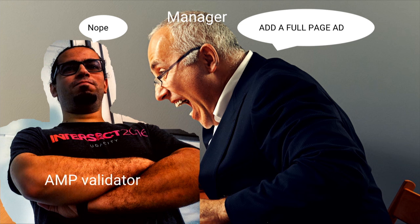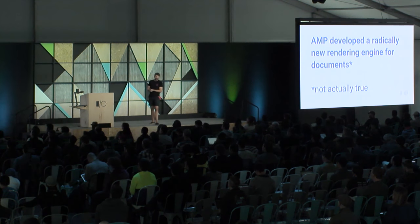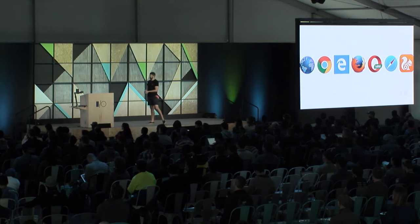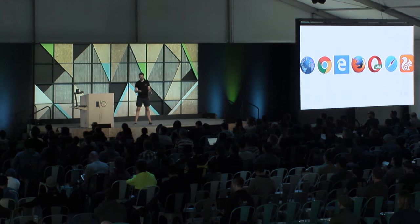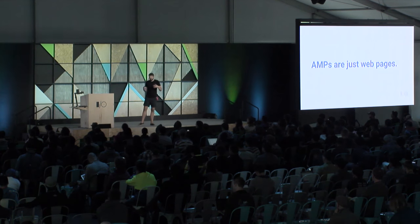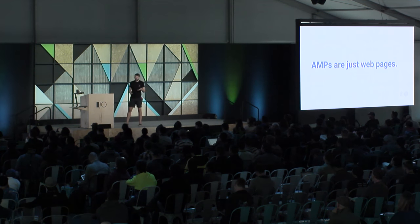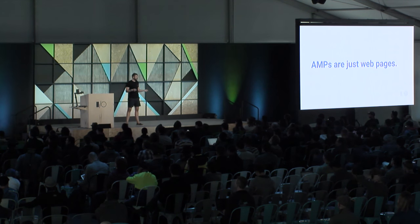Let's go into how AMP works. We did not develop a radically new rendering engine for documents - because why would you? We're in 2016 and there are all these browsers, and they're all great. Looking back 10 years, that was not the case. So I think we're in exciting times for web development where you don't really have to worry about browsers anymore. AMP pages are just web pages. There's no special rendering engine. And that is why everything AMP is doing internally to gain its performance is basically equally applicable to all non-AMP web pages.